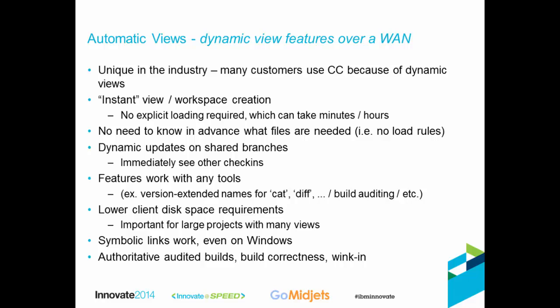Another advantage of dynamic views is that symbolic links work even on platforms that don't have native symbolic link support, and that will hold true for automatic views as well. Dynamic views also support what I refer to as authoritative audited builds. Since we have a file system in the kernel, we can monitor all file system activity during builds. During the build of any target, we notice which files were opened for reading and which files were written, then assemble that list and associate it with any targets that were built. This gives you an authoritative bill of materials of all versions that went into building each target, which is invaluable for companies with high traceability requirements.